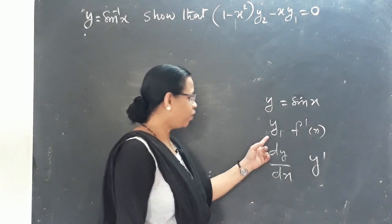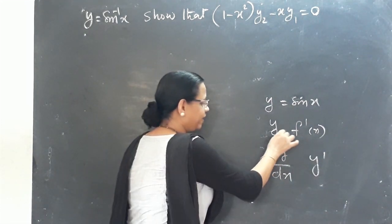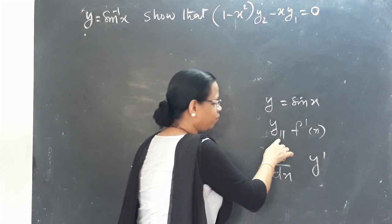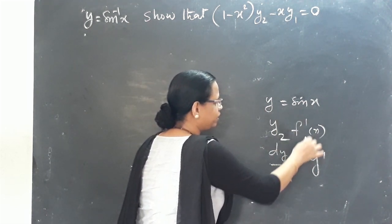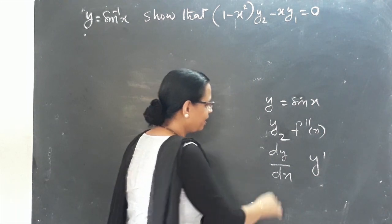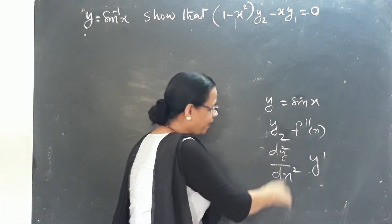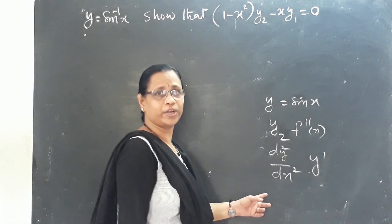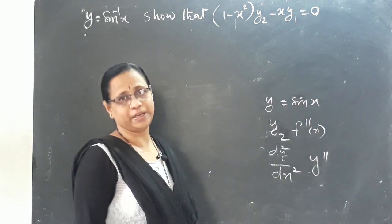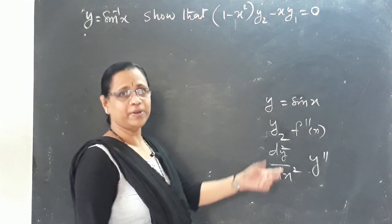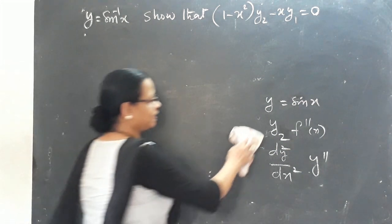The second order derivative has various notations. The name here is y2. It is also written as y double dash, or d²y by dx². These all refer to the second order derivative.